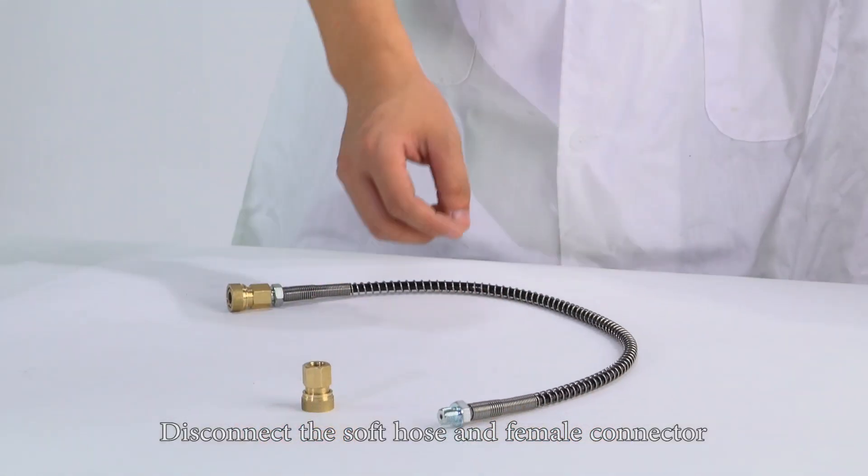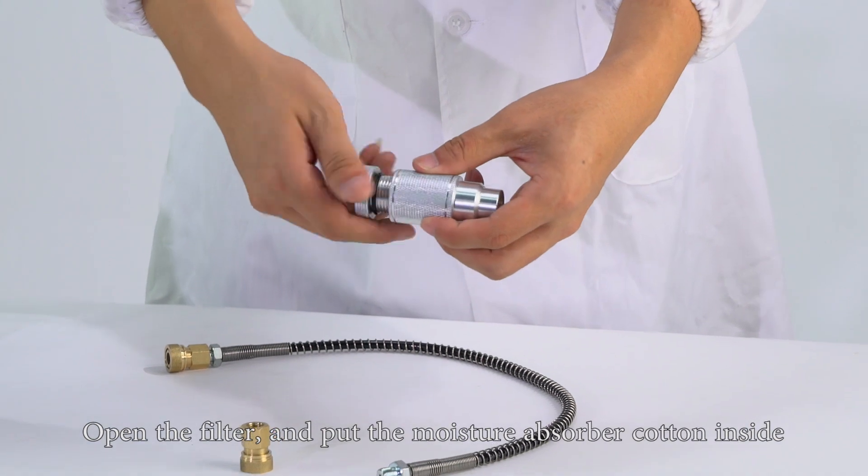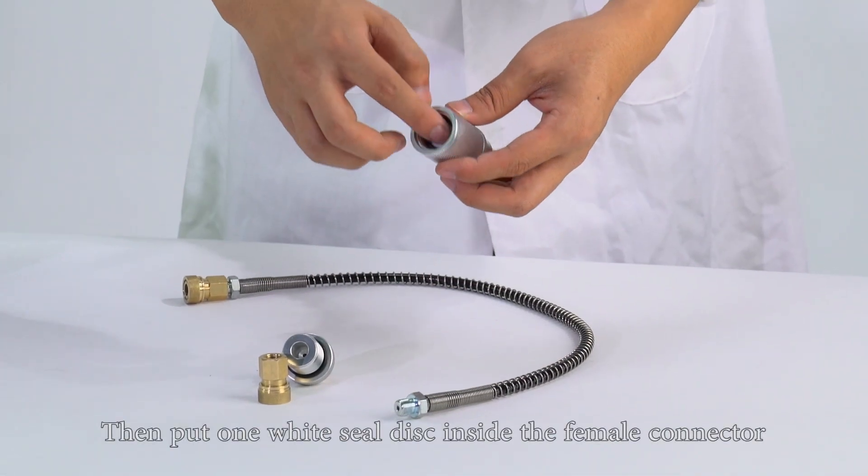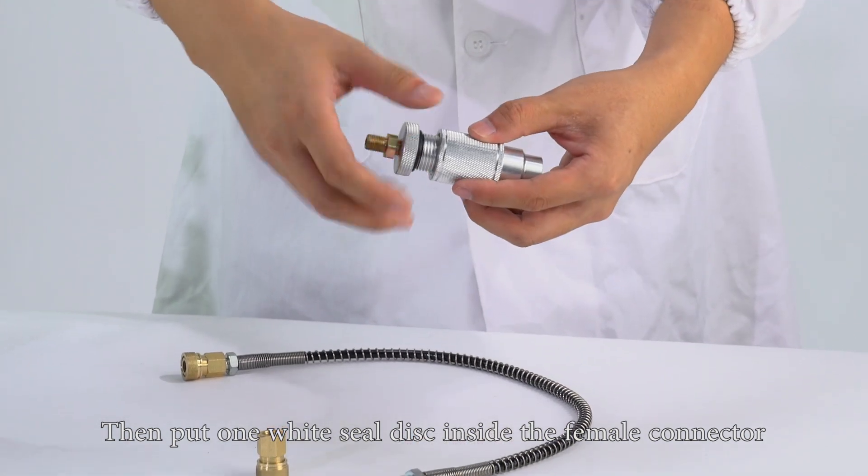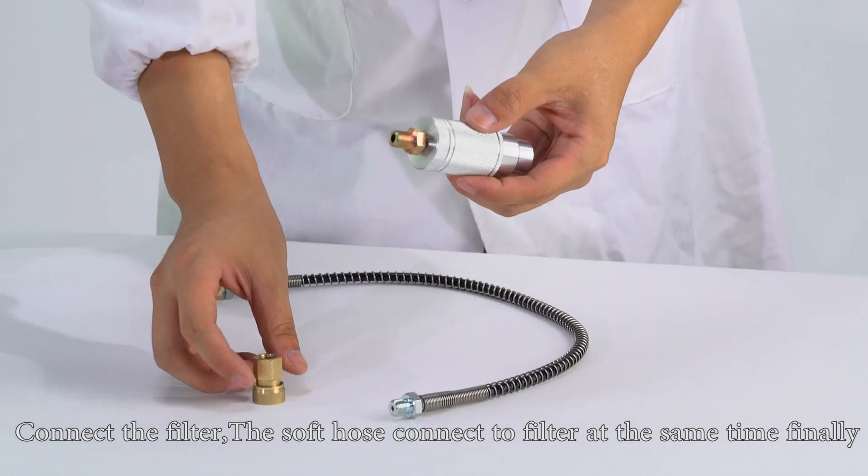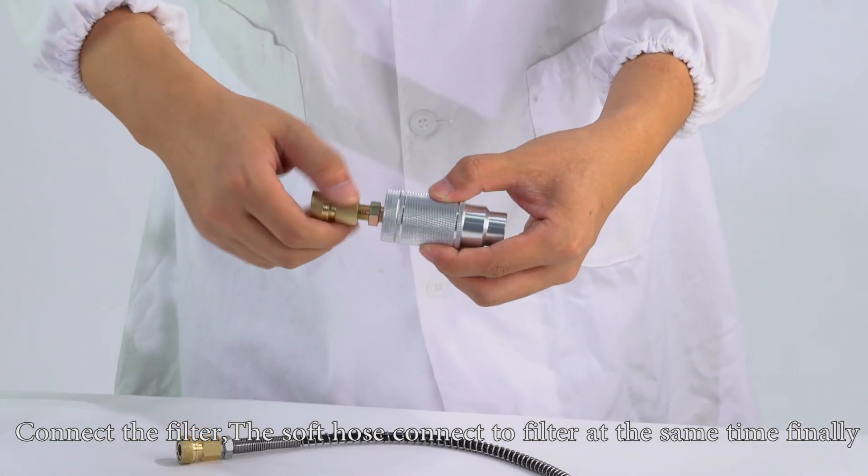Disconnect the soft hose and female connector. Open the filter and put the moisture absorber content inside. Then put one wet seals disc inside the female connector. Connect the filter. The soft hose connects to filter at the same time finally.